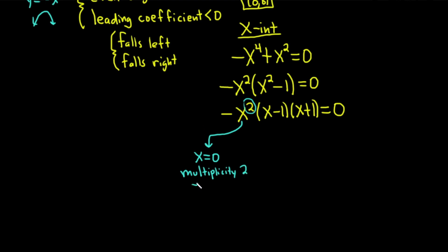And because it's even, even multiplicity, that tells us that it's going to touch the x-axis and turn around at that number. So if you have an even multiplicity, it touches and turns around. That's key. That's super important.